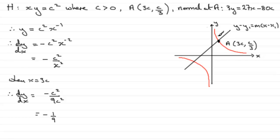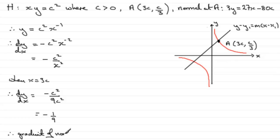This is negative — that looks good, that's what we would expect. Therefore, the gradient of the normal: we just invert it and switch the sign, so the gradient of the normal equals 9.